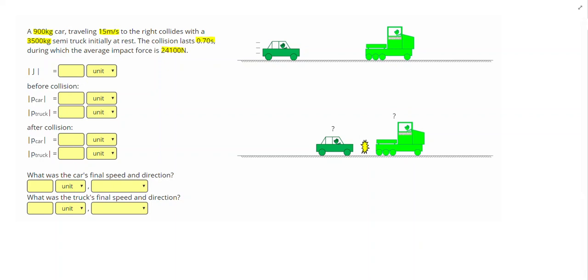Alright, so this is a momentum and impulse problem. How I want to start out is under each object, I'm going to write P, M, V, since remember P stands for momentum, M is for mass, and V is for velocity. And I'm also going to write impulse, force, and time.